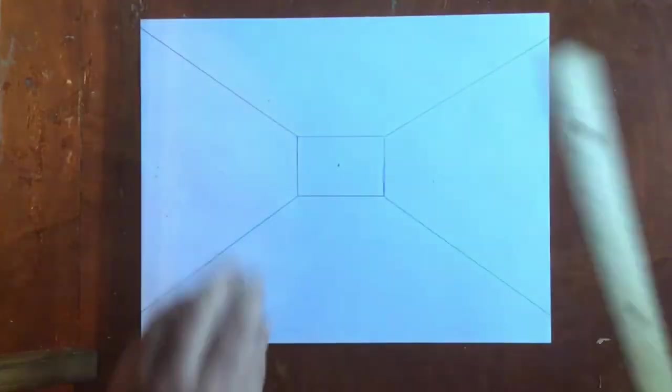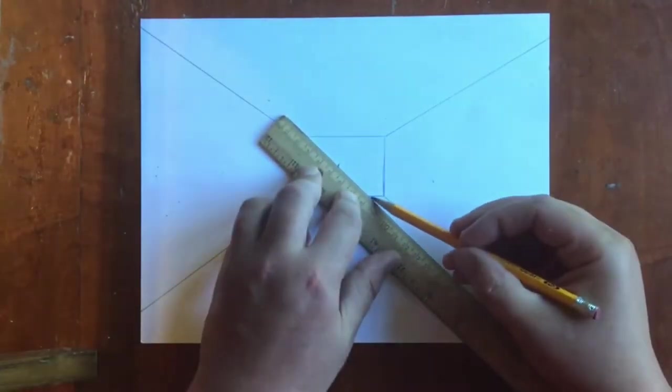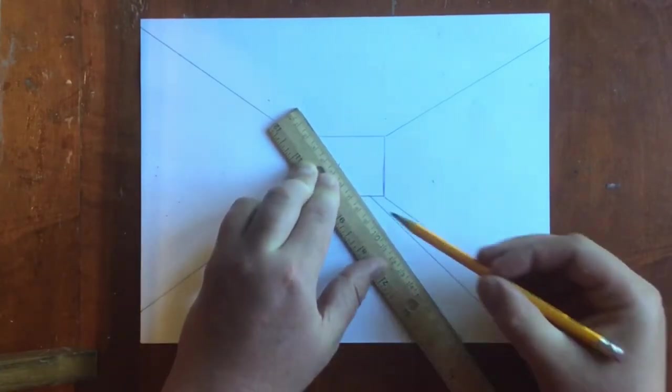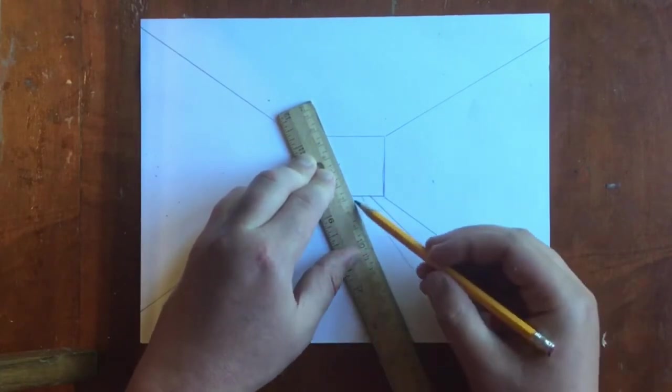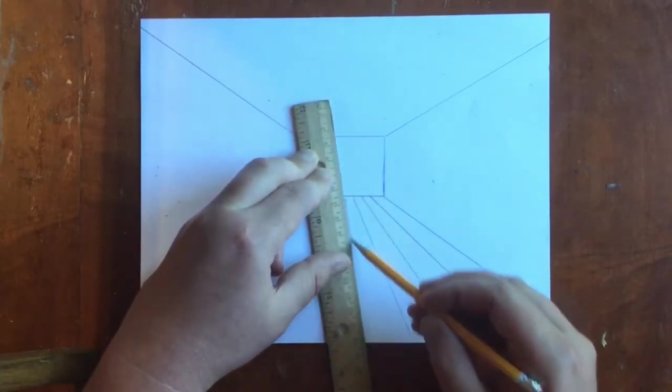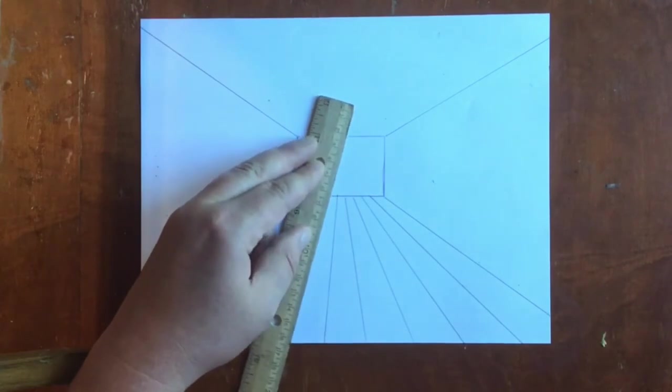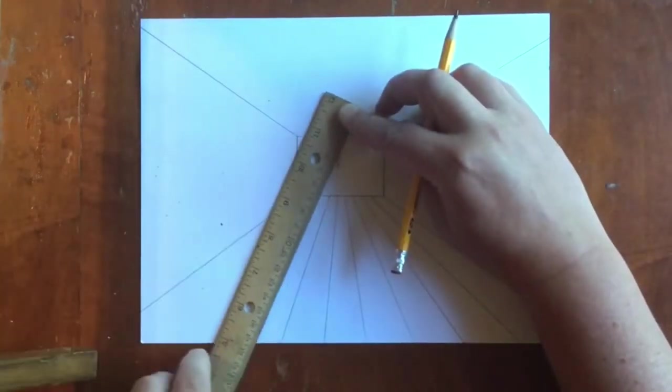Now that I've got the lines in all four corners going off the paper, I'm going to make tiles on the floor of my room. Lining up my ruler with the vanishing point, I'm going to make lines starting at the floor on the bottom of the rectangle going all the way off the paper. Each time I make a line, I have to make sure that my ruler is still touching the vanishing point. That's a very important step.